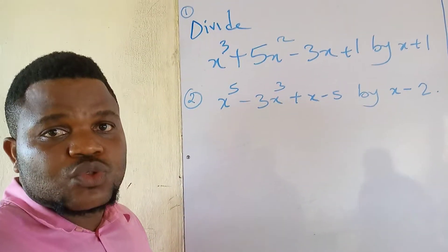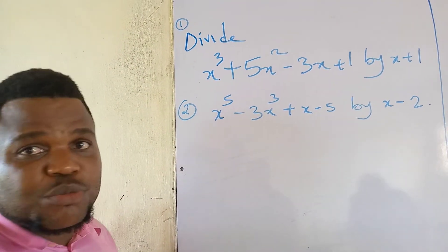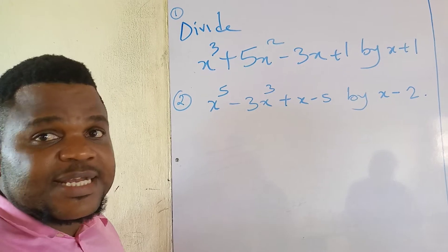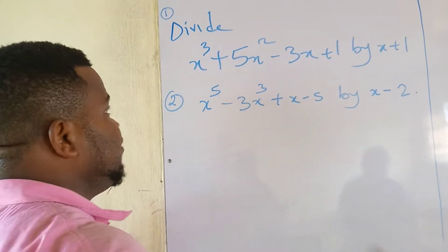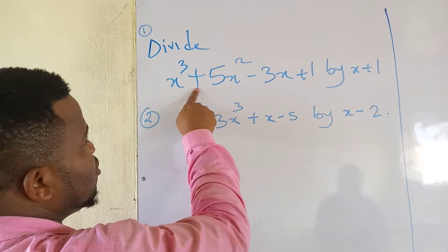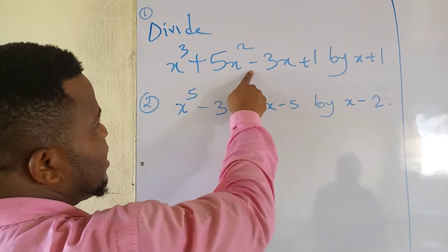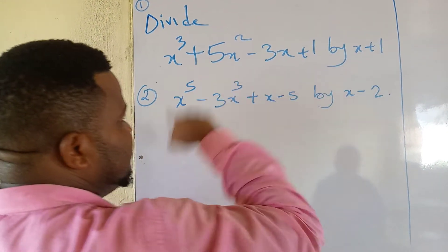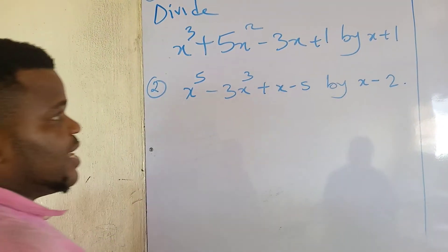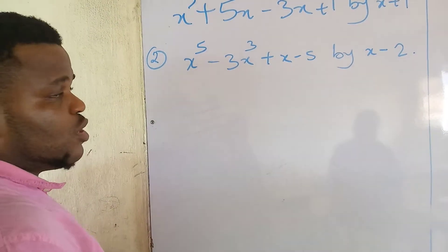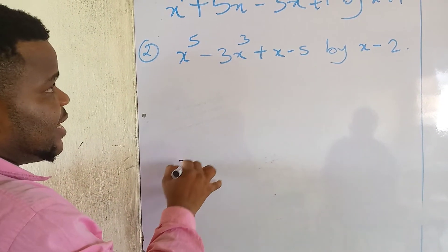Let me explain how to divide polynomials using synthetic division — also called long division of a polynomial. For example, we are given x cubed plus 5x squared minus 3x plus 1 divided by x plus 1.